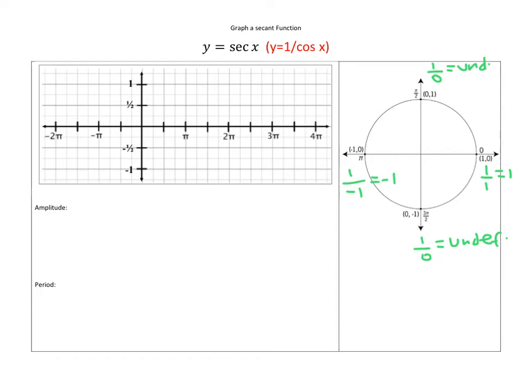In this video we're going to look at how to graph the secant function. Secant is given by 1 over cosine, and on this unit circle we're going to use the four quadrant angles. This should be enough to show us how the graph looks.